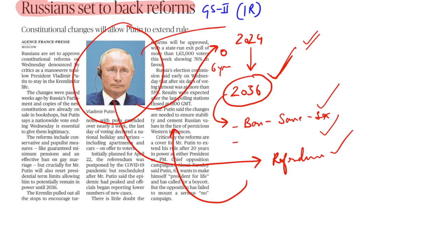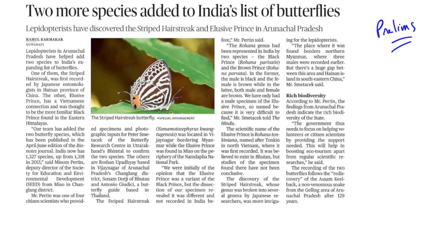Very briefly, we will see the two species of butterflies which have been added to India's list of butterflies. They are the stripped hair streak and the other is the elusive prince. And both of them have been found in Andhra Pradesh. That's it. Please don't go little bit more deeper than this because thousands of butterflies have been there. But why we are doing it? Because earlier, such type of things have been asked in the UPSC. So, just please remember where they have been found.